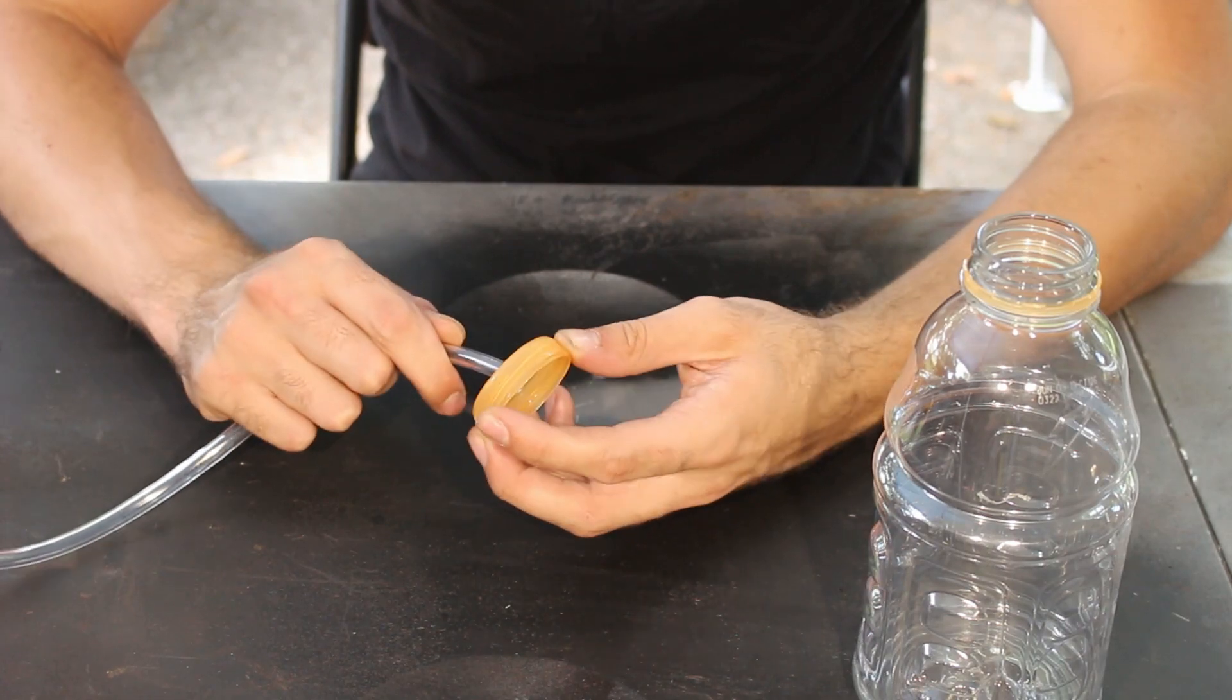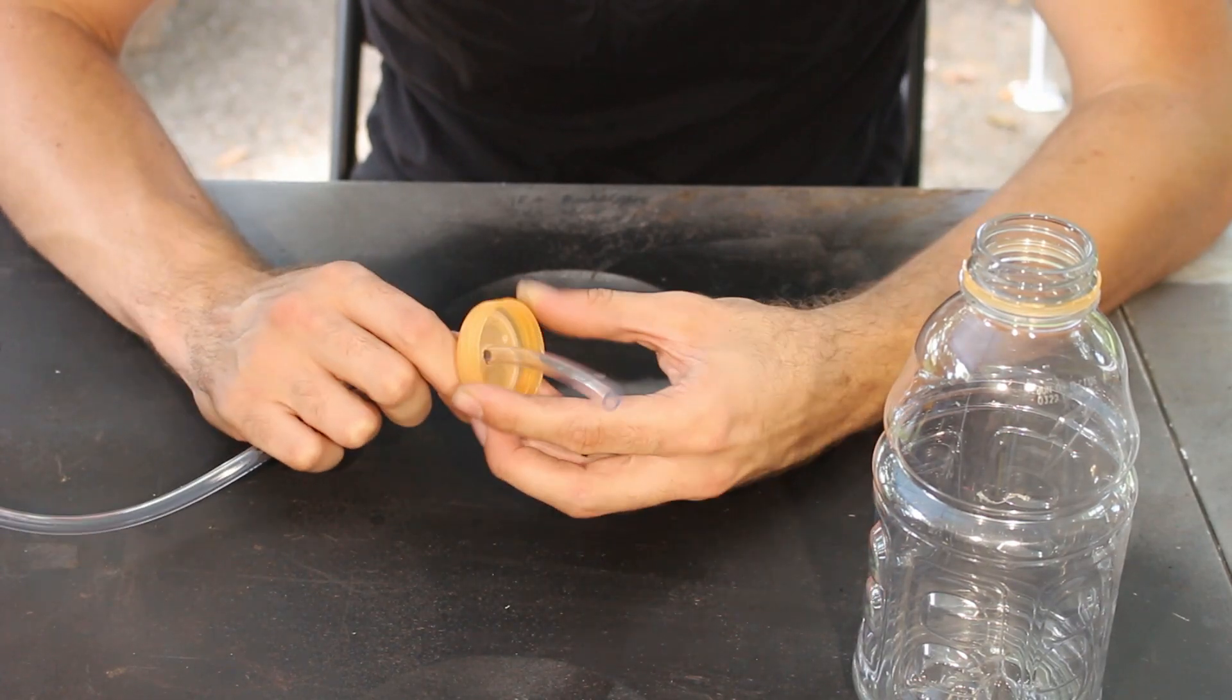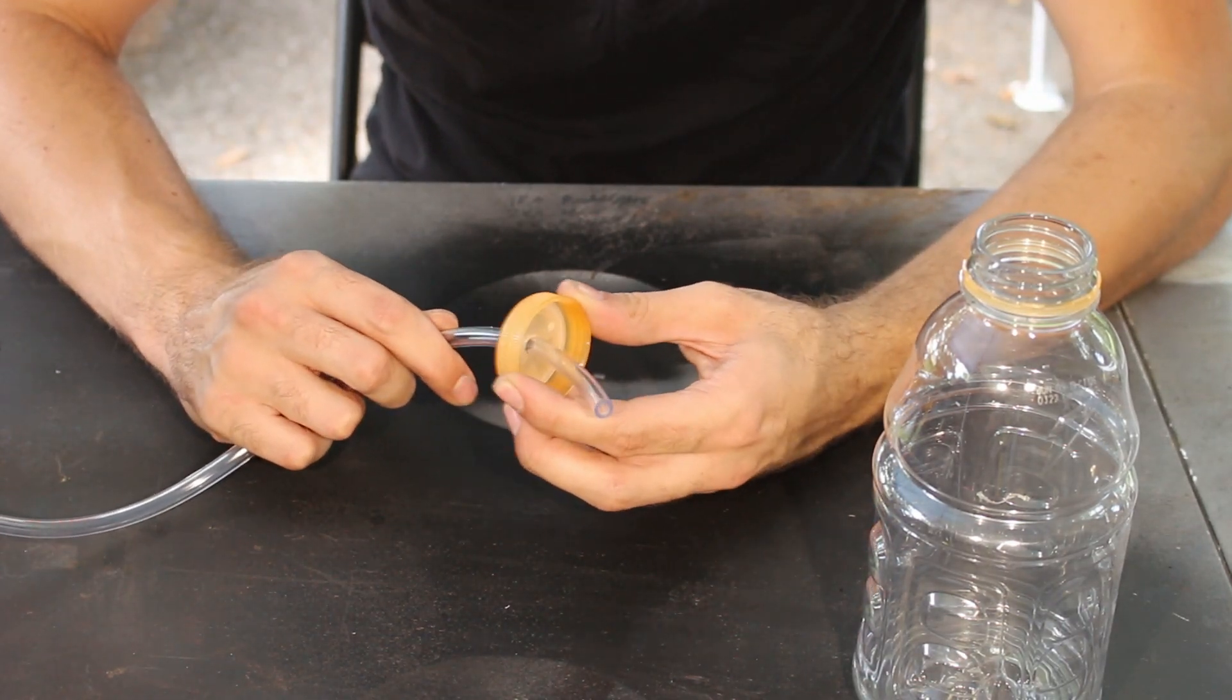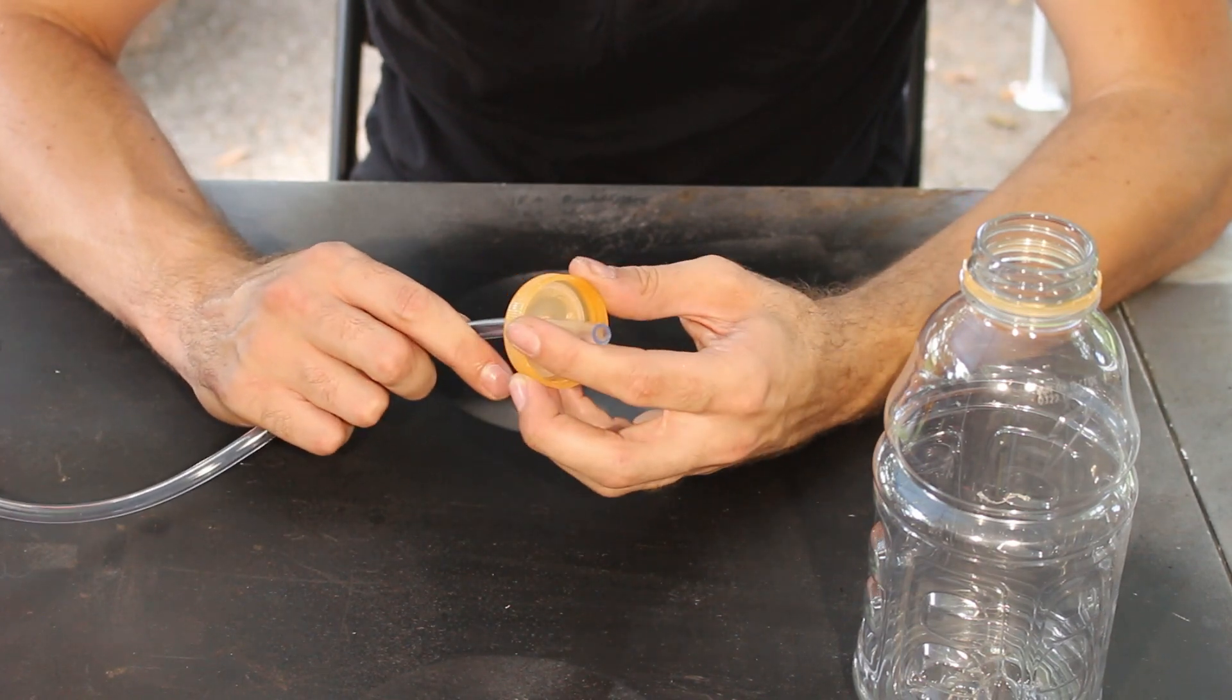The hole in the center of the cap should be a nice fit for the hose. It shouldn't be too loose. It should be easy to slide through. Not too tight, but not too loose.